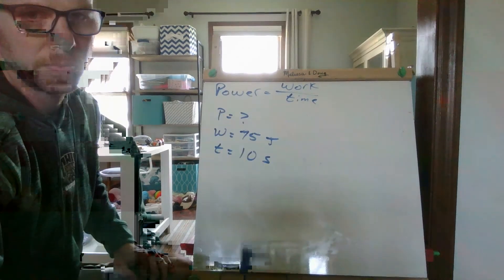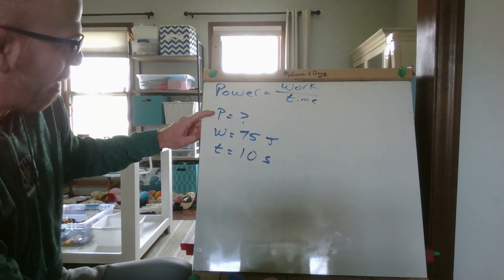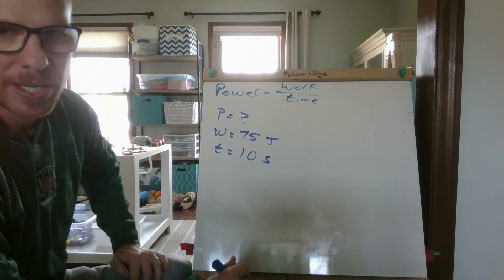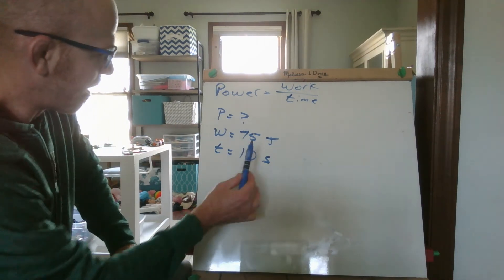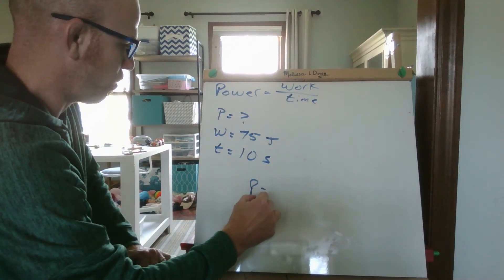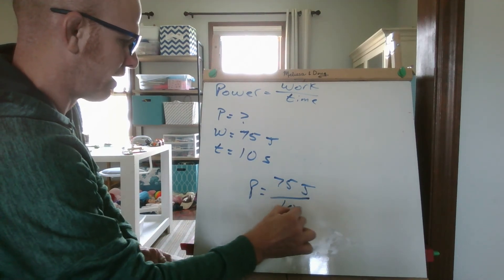So let's do a practice problem. So here I have the units. The power I don't know. The work is 75 joules and the time is 10 seconds. Easy to plug these numbers into the equation.